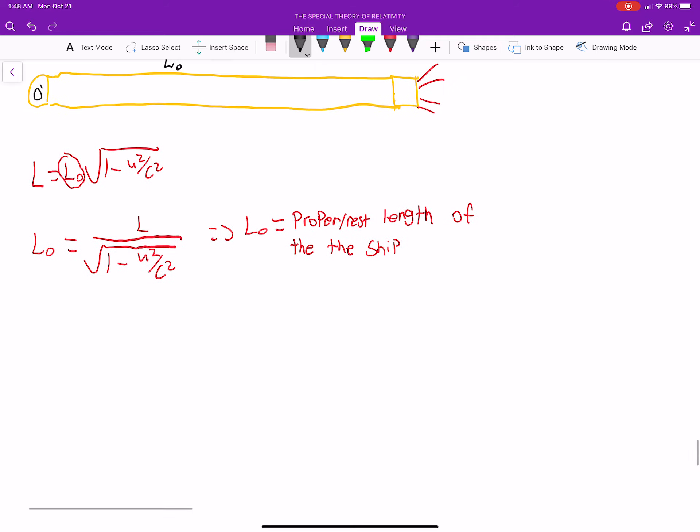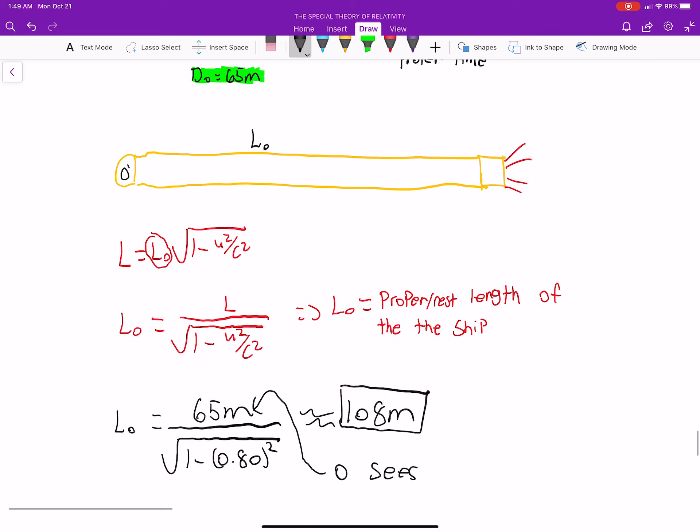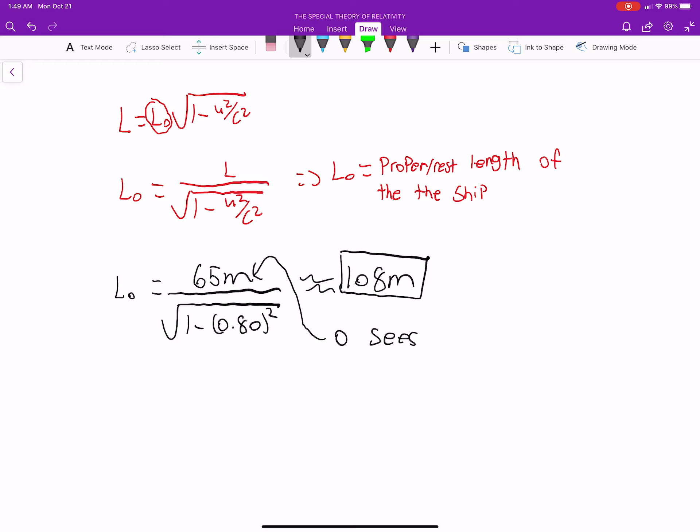So if you plug the numbers in - so this is 65 meters divided by the square root of 1 minus 0.80 squared - you get about 108 meters. So this is the actual length of the ship at rest. Now, we use the 65 because this is what O sees. That's basically the contracted length, the squeeze-down ship. That's the length of the ship squeezed down. In this particular question, we're not actually asking how much is the ship shrunk by. We already know that it's 65 because that's what O measures originally. We're asking how much it is without it being shrunk. So hopefully that makes sense on why we would call L 65.